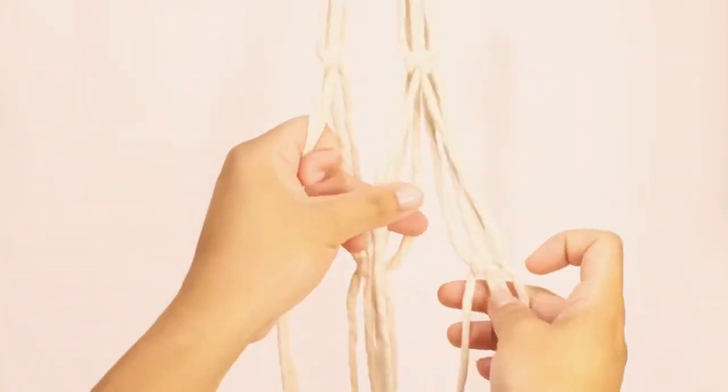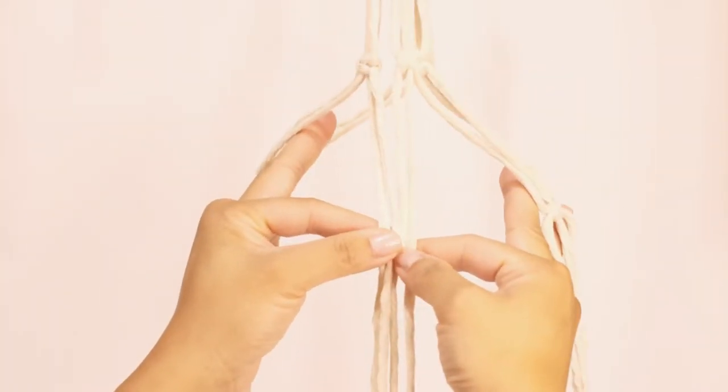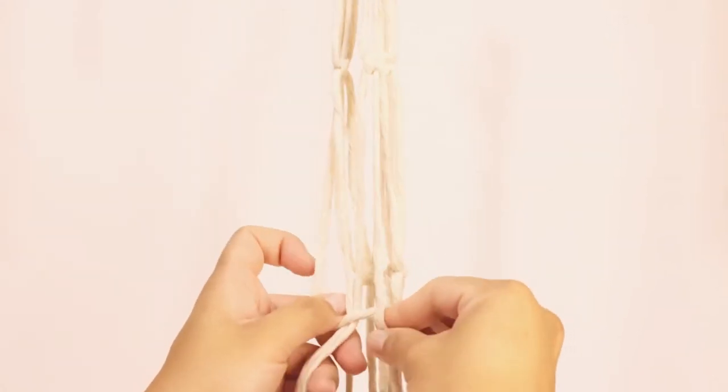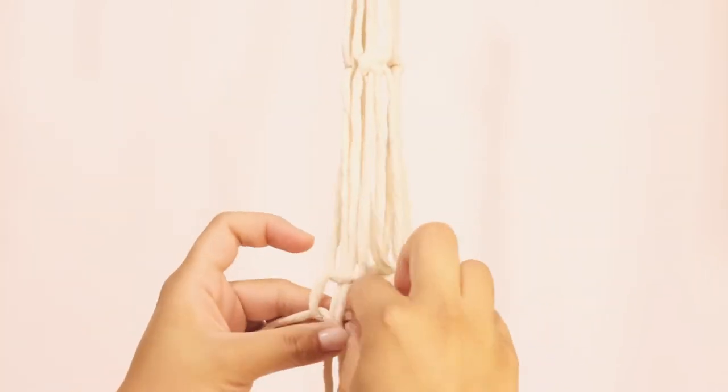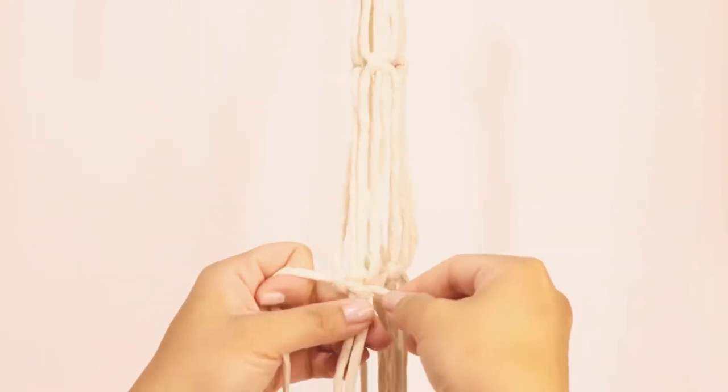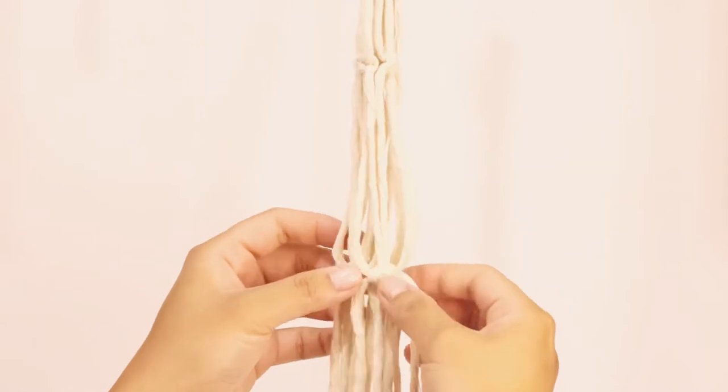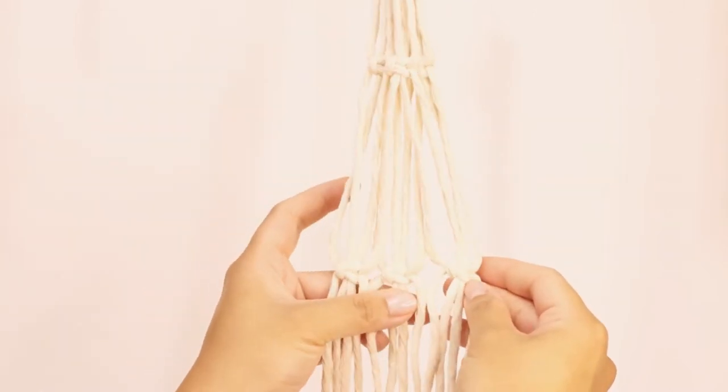And that's our second square knot. Making sure that it's even, now we're gonna make our last square knot. And there you go, all the square knots are done.